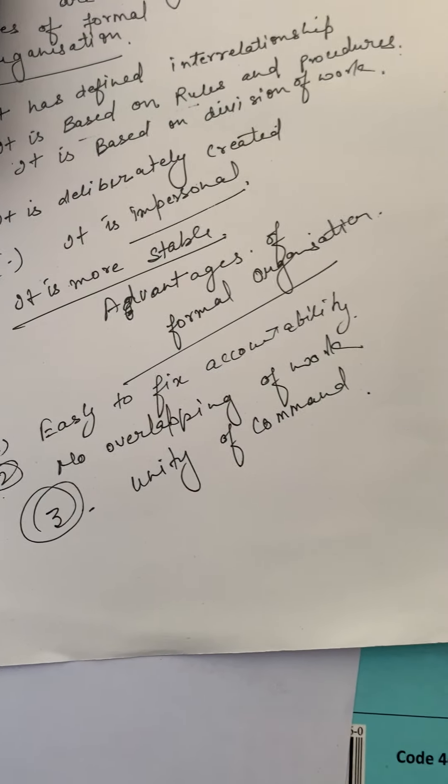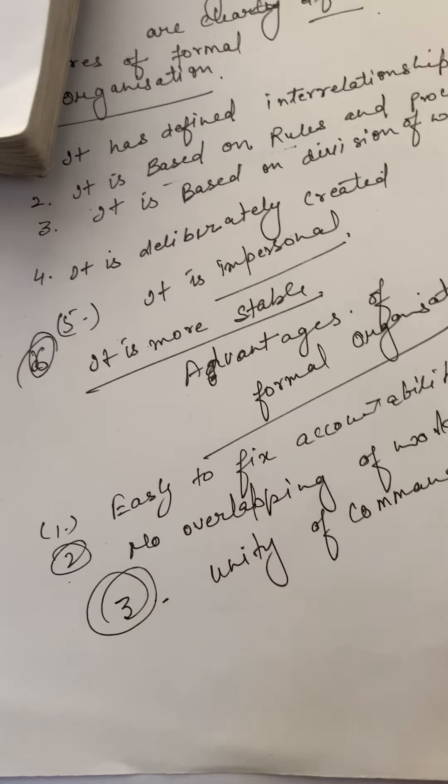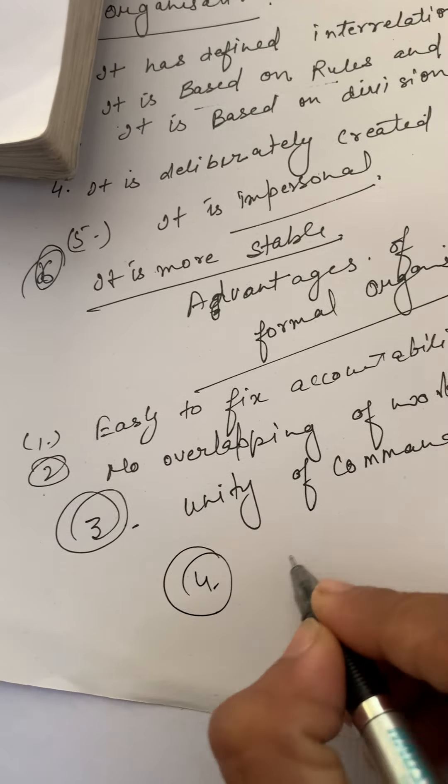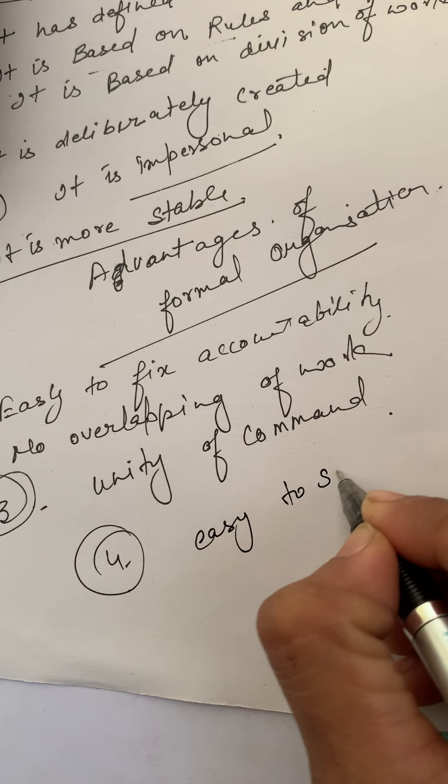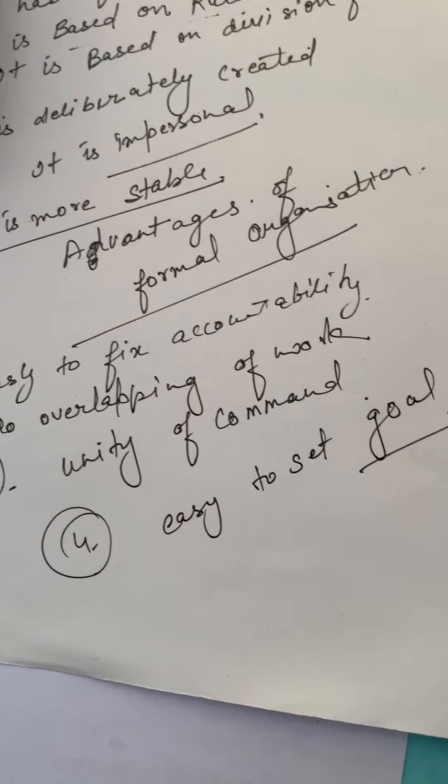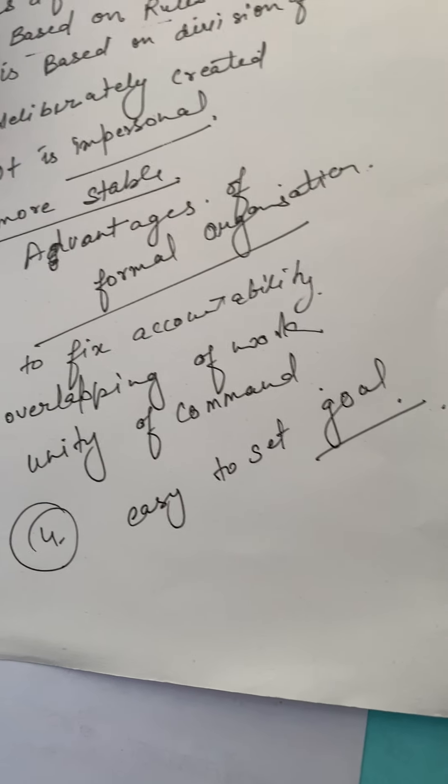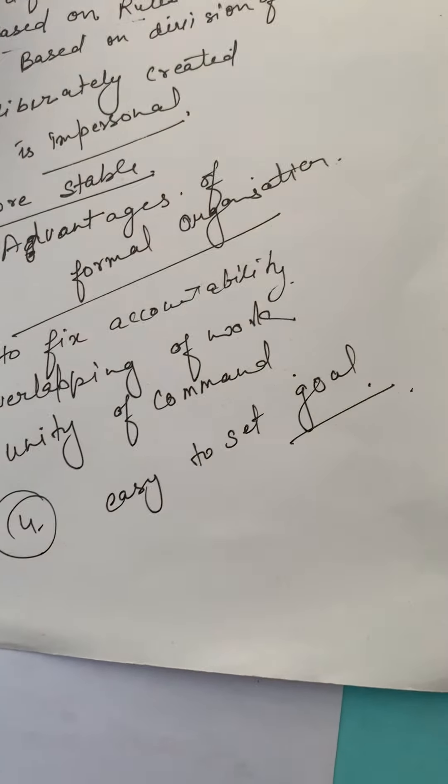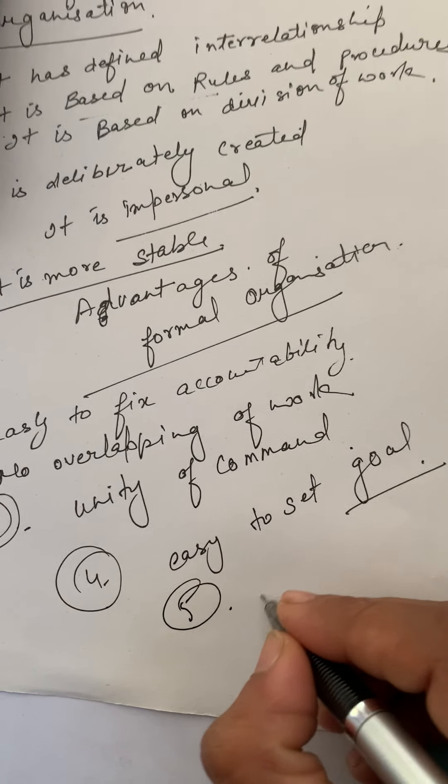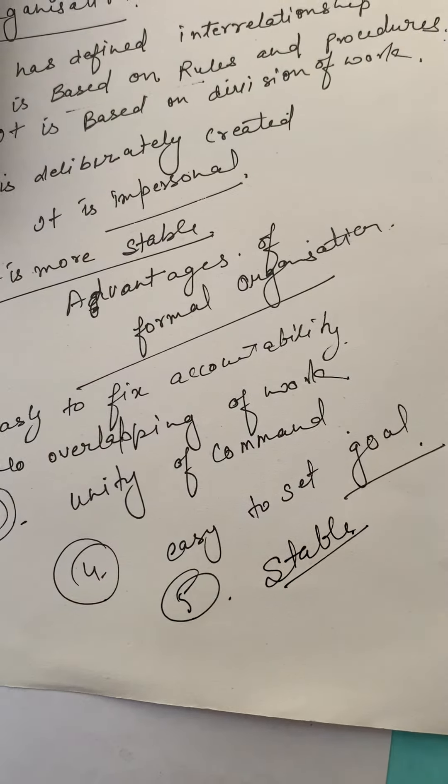This is formal organization. Next is easy to set goals. It is easy to set goals. And the last is stable - this organization is more stable.